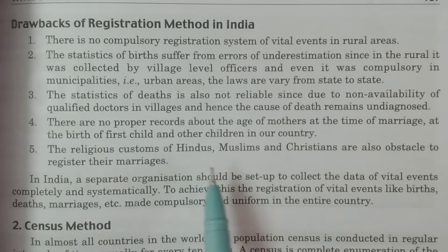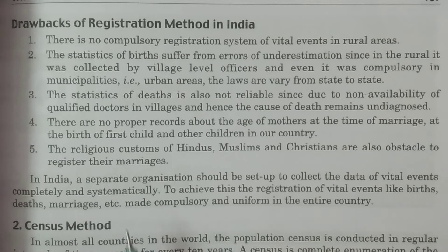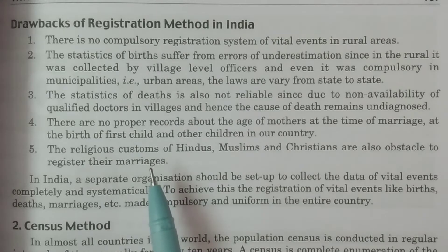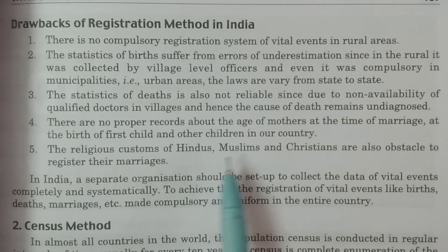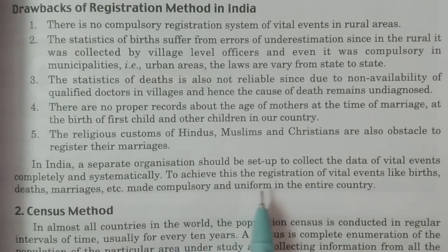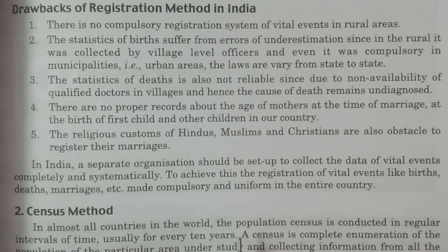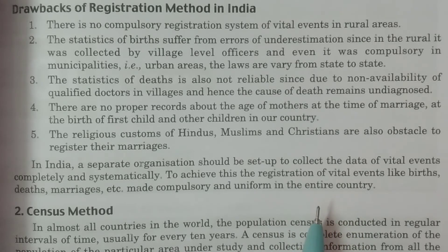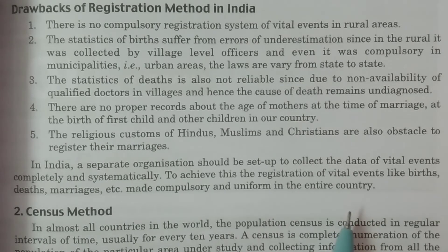The religious customs of Hindus, Muslims, and Christians are also an obstacle to registering their marriages — marriages are not going to be registered properly because of customs of various religions. Therefore, in India, a separate organization should be set up to collect data on vital events completely and systematically. To achieve this, the registration of vital events like births, deaths, marriages, etc. must be made compulsory and uniform throughout the entire country, from one state to another.